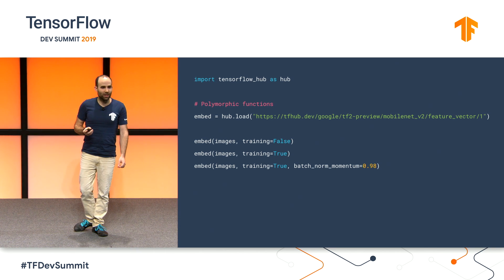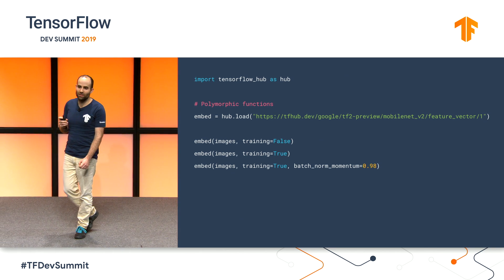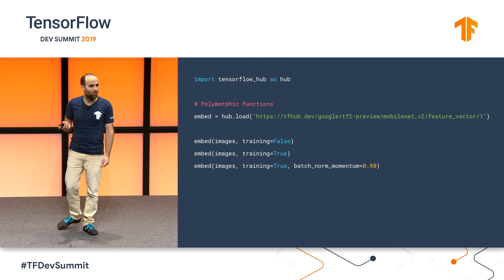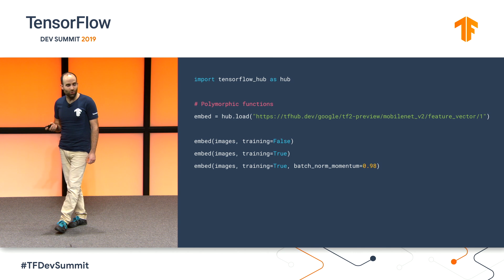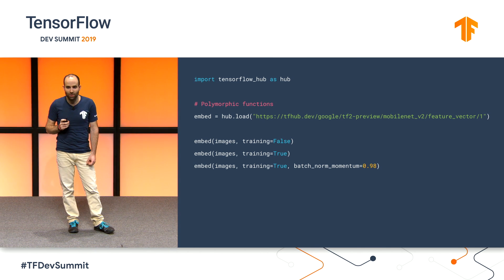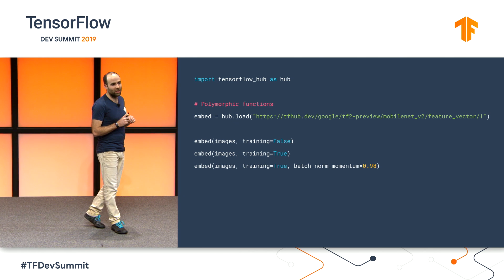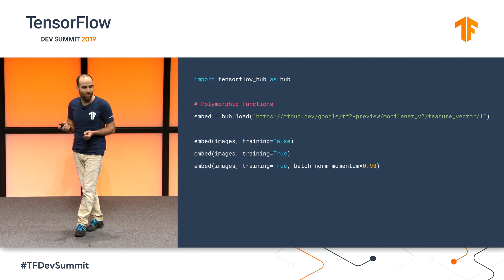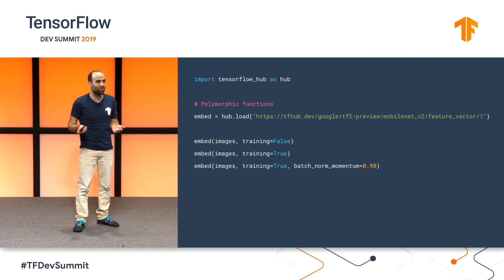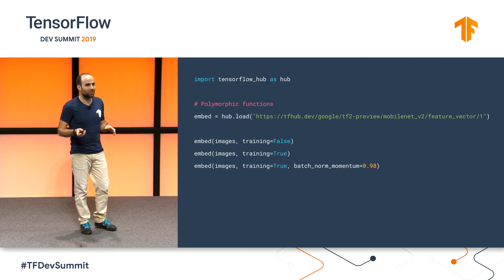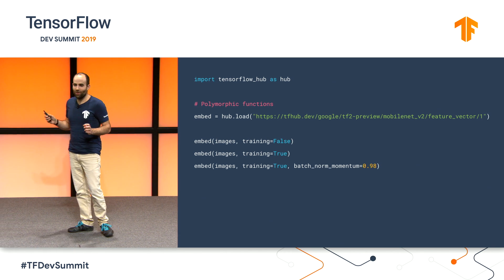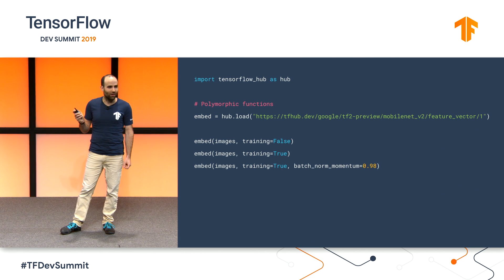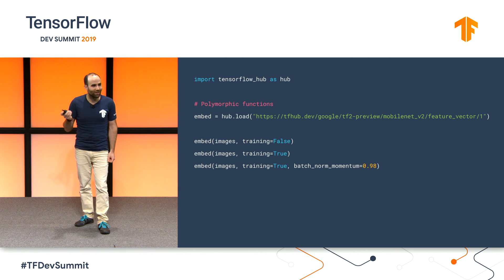We are also really excited that we added support for polymorphic functions when we serialize tf functions on SavedModel. This will provide a more natural interface than we had before with signatures. For example, here we see an image representation module being loaded and then being used in inference mode, or being used during training mode where batch norm is on. We can also control some of its parameters. And all of this is just backed by tf graphs, so we no longer need to be selecting things here and there — we just get an API that looks very much like Python.